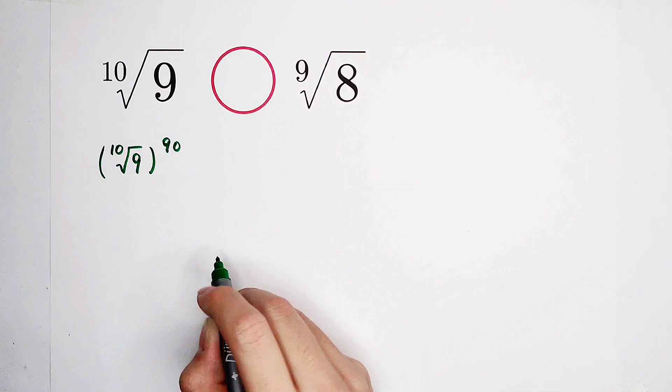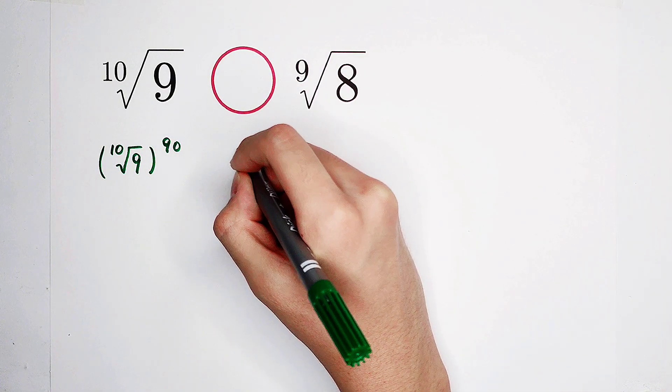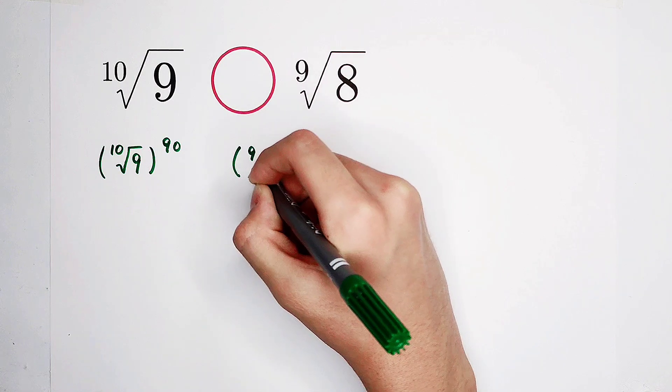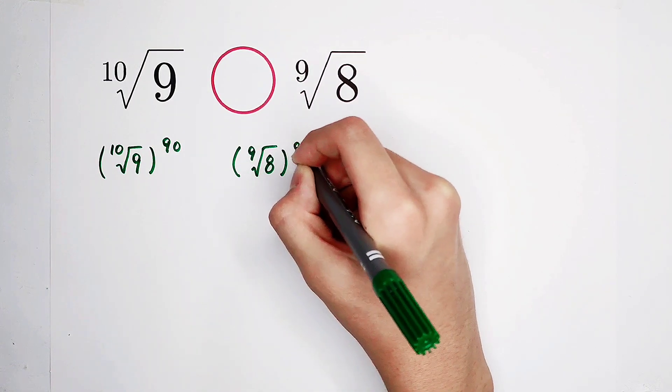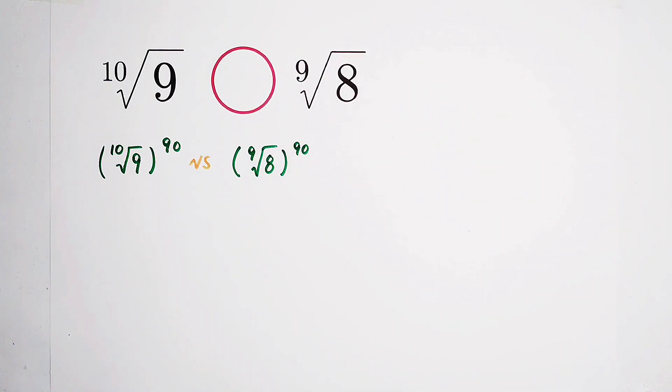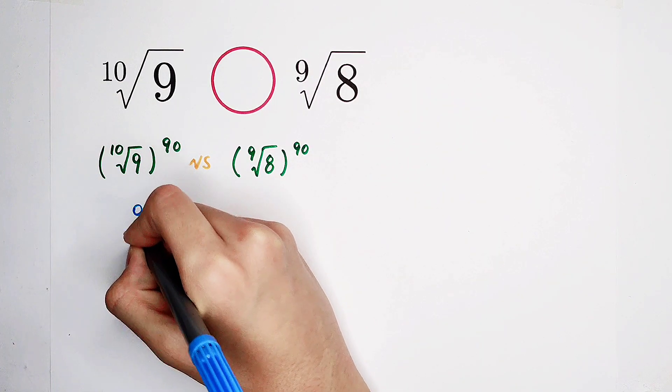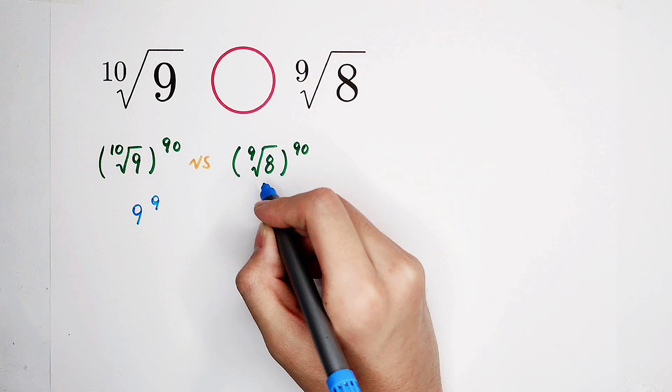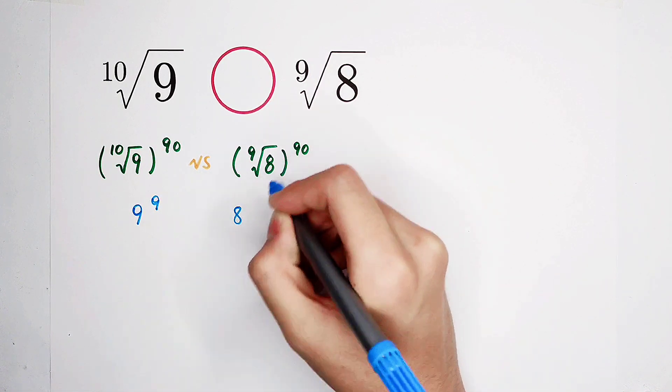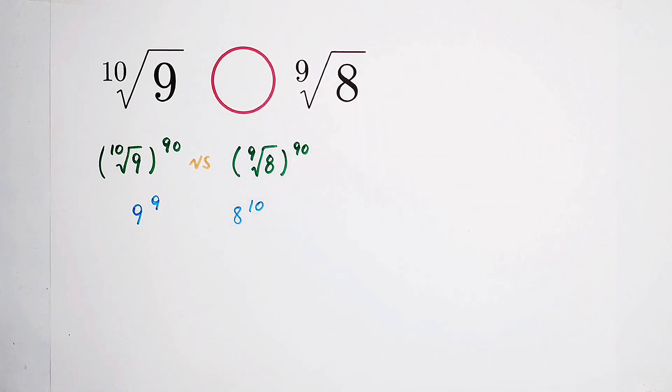Raise it to the power of 90. This as well. On the left side, we have 9 to the power of 9. On the right hand side, we have 8 to the power of 10. So now we only have to compare these two numbers.